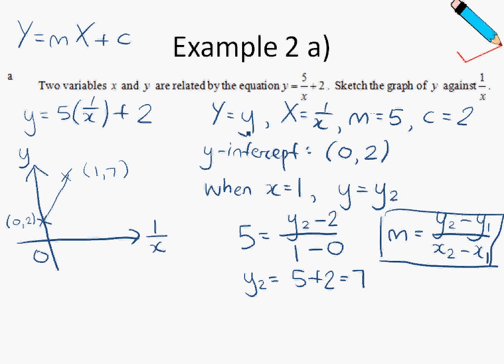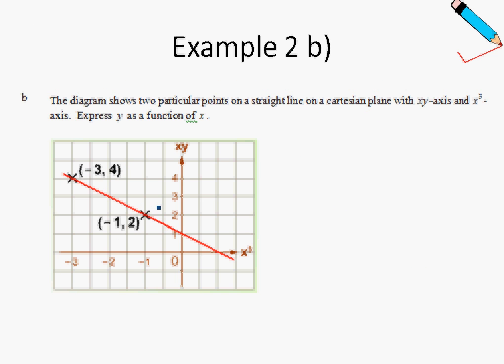Okay, and this is the sketch of the line y equals to 5 over x plus 2. Okay, moving on, let's look at example 2b.